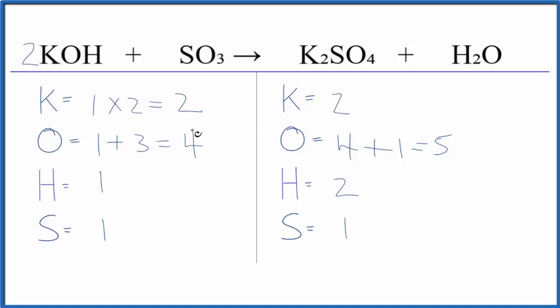Let's update the oxygens and the hydrogens. So two times the one, that gives us two oxygens, plus the three here. That gives us five. Hydrogens, two times the one, that gives us two. And this equation is balanced.